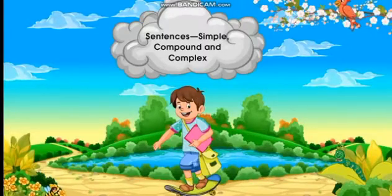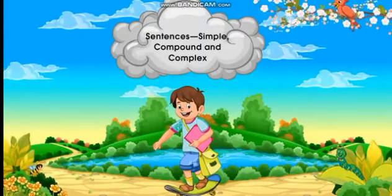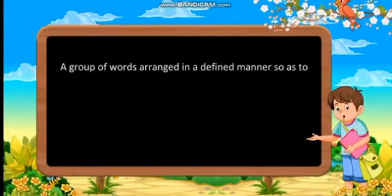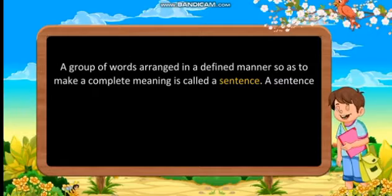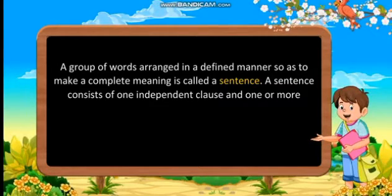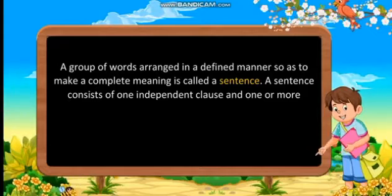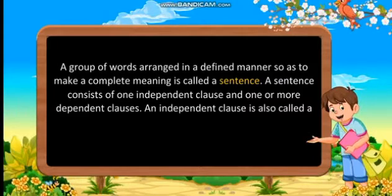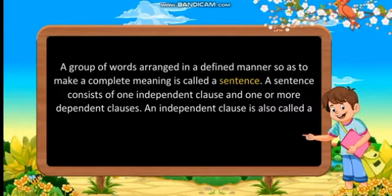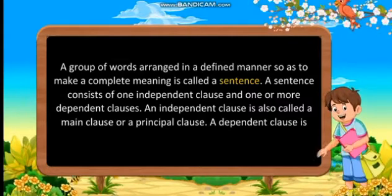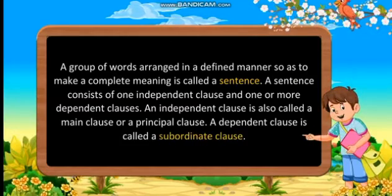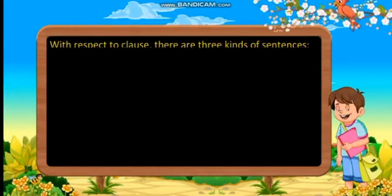Sentences: Simple, compound and complex. A group of words arranged in a defined manner so as to make a complete meaning is called a sentence. A sentence consists of one independent clause and one or more dependent clauses. An independent clause is also called a main clause or a principal clause. A dependent clause is called a subordinate clause.